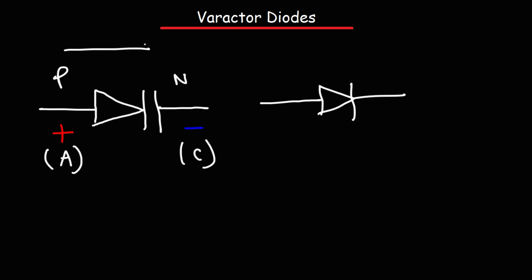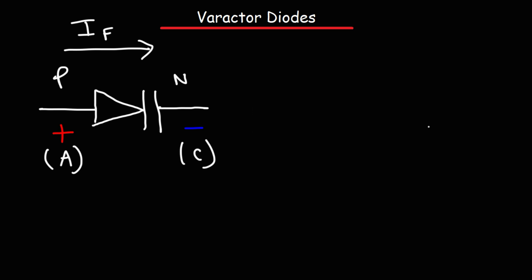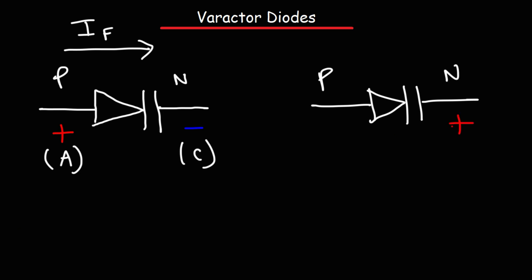When current flows from the P-type material towards the N-type material, this is conventional current, which is in the opposite direction of electron flow. When it flows in this direction, it's said to be forward biased. If we apply a positive voltage at the N-type material and negative voltage at the P-type material, then it's in reverse bias mode.